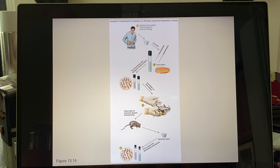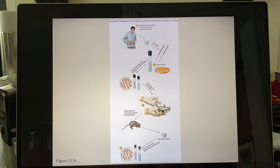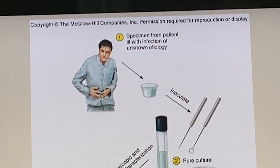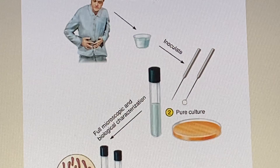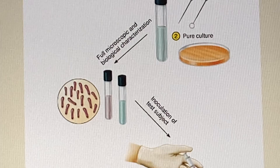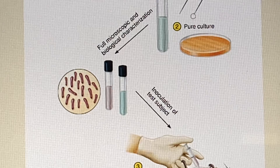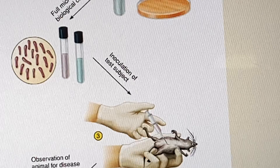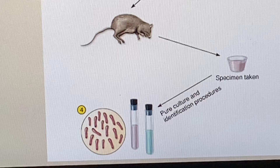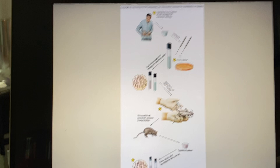Here it is in graphic form. Let's say we have a guy having some type of gastrointestinal infection — and he's one of many, all showing the same signs and symptoms. We take a stool culture, bring it into the lab, inoculate it on agar, and use the streak plate technique to get a pure culture. We look at it under the microscope, gram stain it, etc. Then we take that pure culture and inoculate it into a healthy lab animal, which should get the exact same disease. We take the same culture from that animal, and lo and behold, it's the same organism. That is what Koch's postulates are.